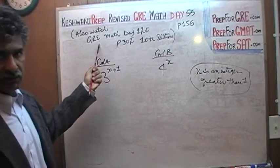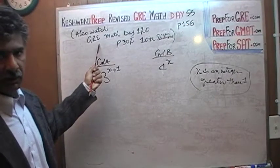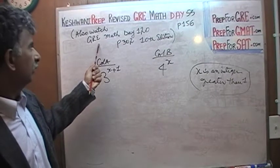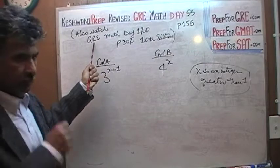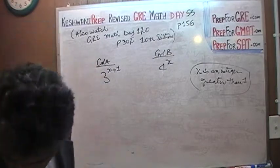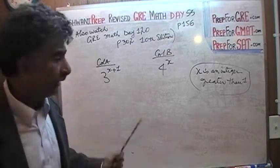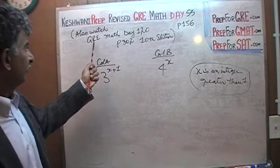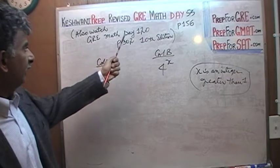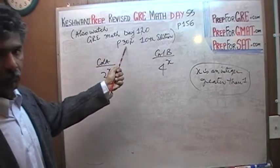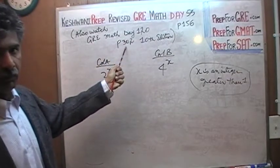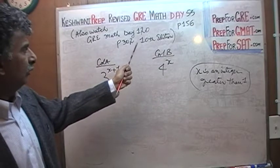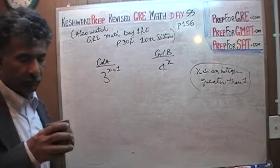I'd recommend watching the video I taped earlier when I was working through that book. Just type in the tag: GRE math day 120. Always include the page number — page 302, 10th edition — and it will pop right up.